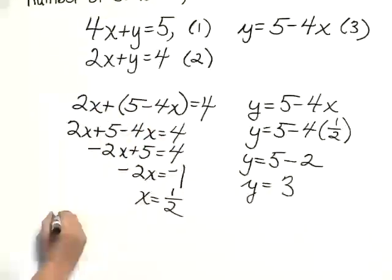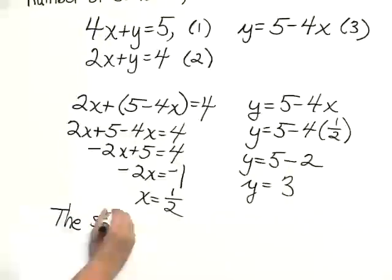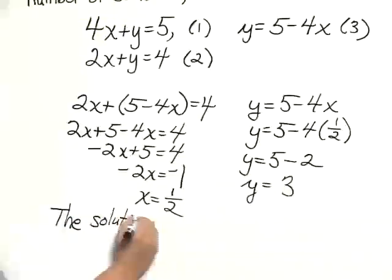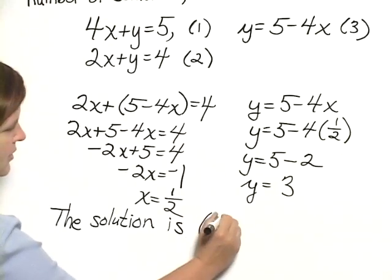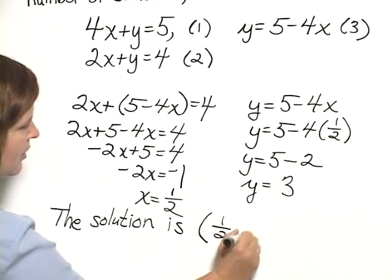So I can state that the solution of the system is, and I want to write it as an ordered pair with x first: 1 half, 3.